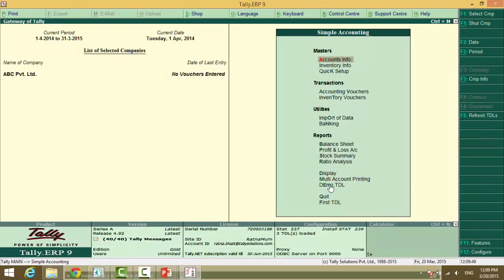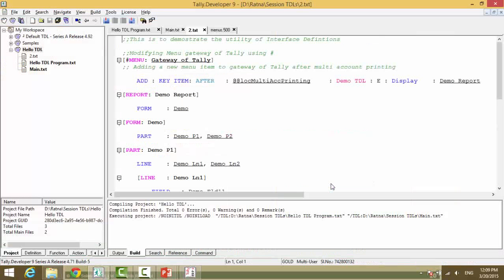Demo TDL is just now below multi account printing. That's because we said add key item after multi account printing. And how did I get this string?